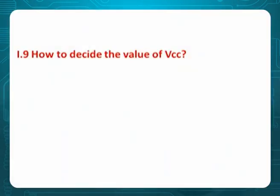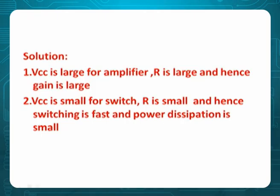Problem 9: How to decide the value of VCC? If VCC is large, for amplifiers: RC is large and hence gain is large. VCC is small for switches because R is small and hence switching is fast, and power dissipation is also small. Conclusion: take VCC large for amplifier, small for switch. That's why most of the time you'll take VCC = 12 volts for amplifier and VCC = 5 volts for switching with the same transistor.